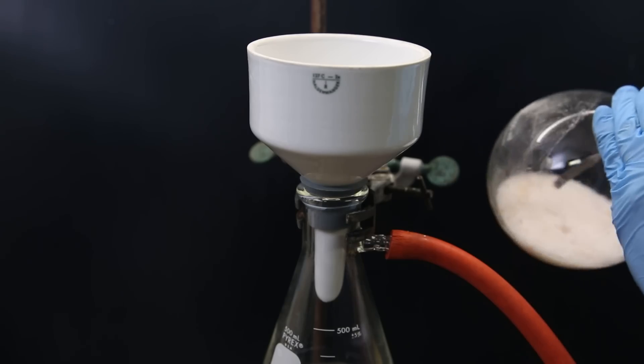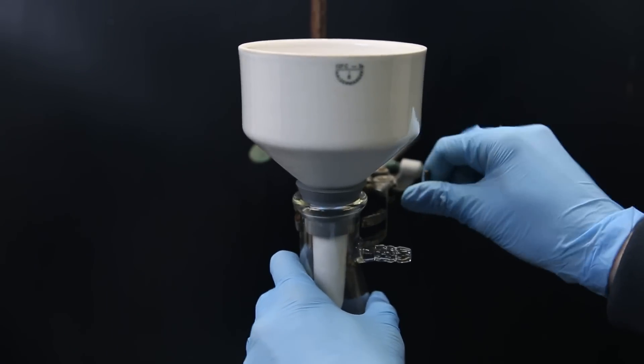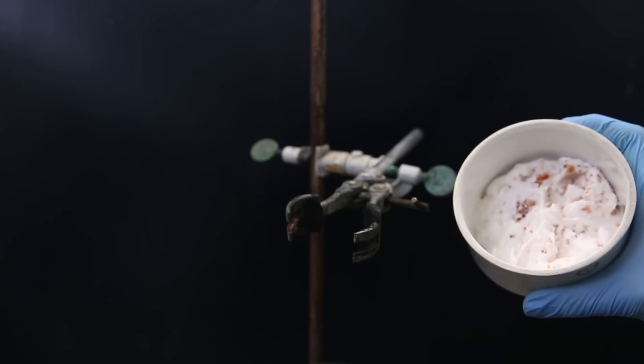Then to collect it, I break it up with a spatula and filter it with vacuum filtration. I wash it with a small amount of water and the product, along with an orange impurity, is left behind on the filter, and it kind of looks like ice cream.